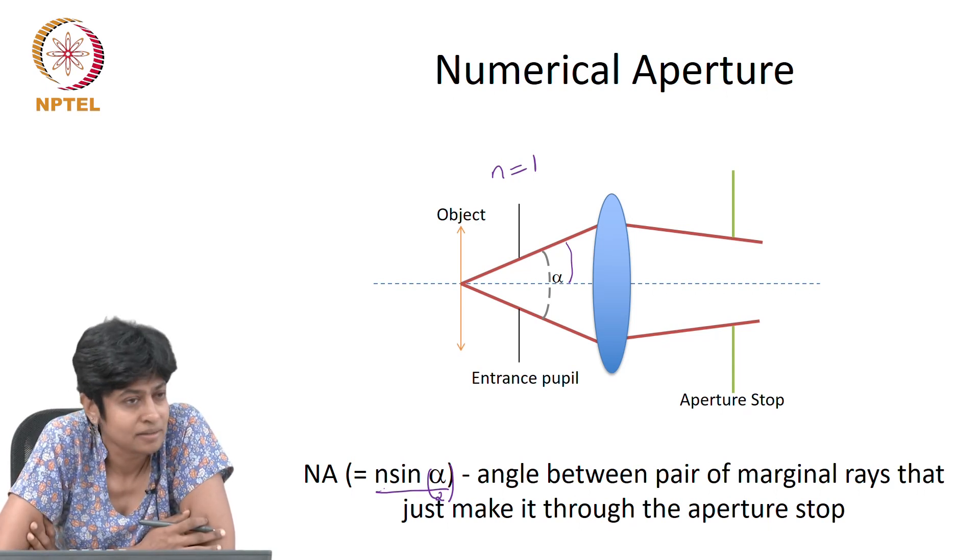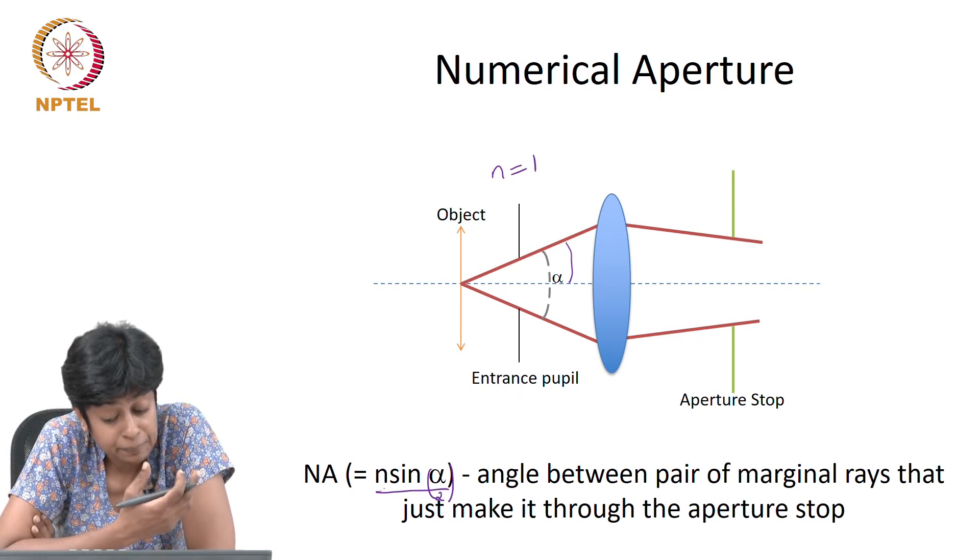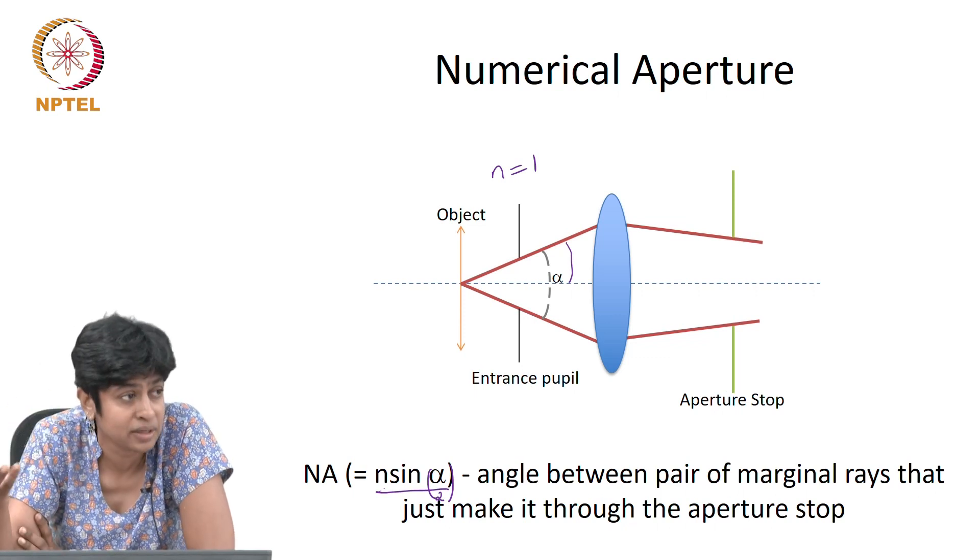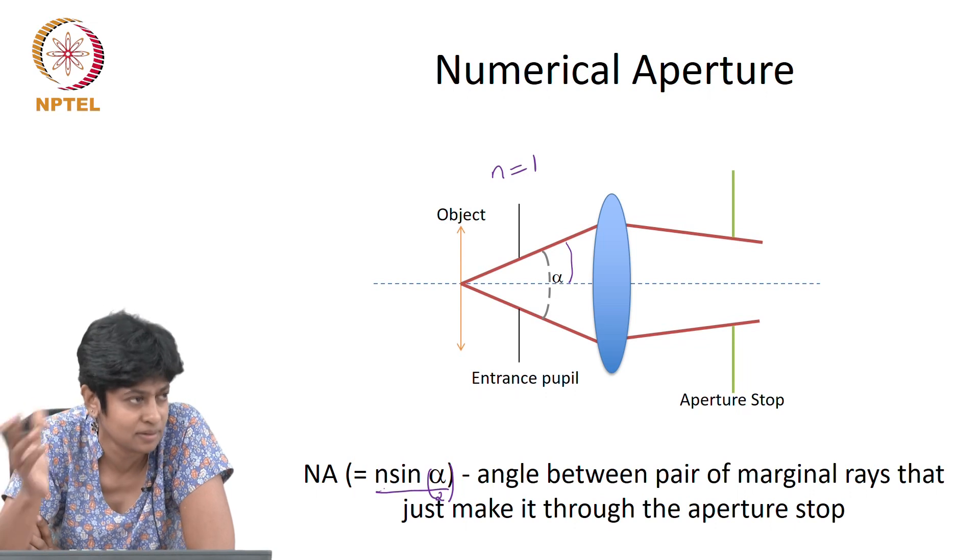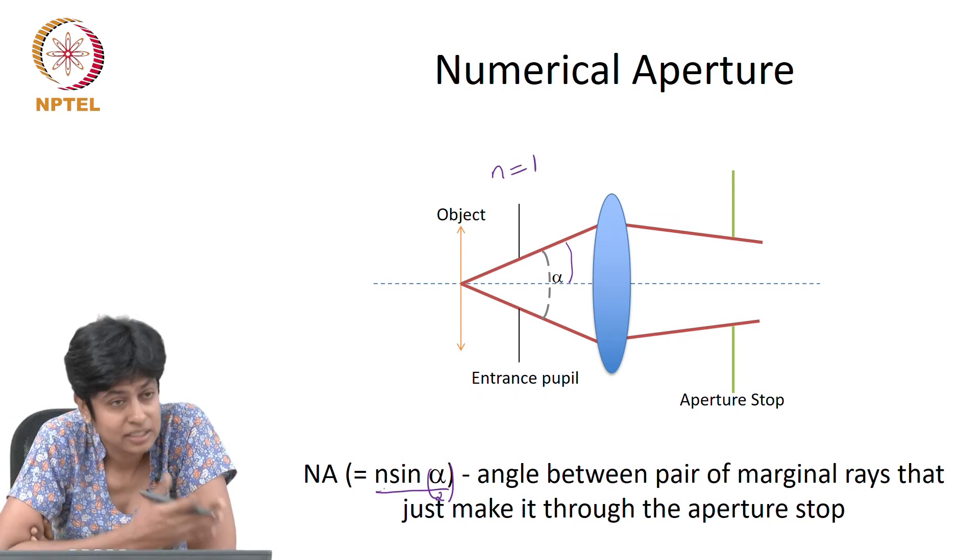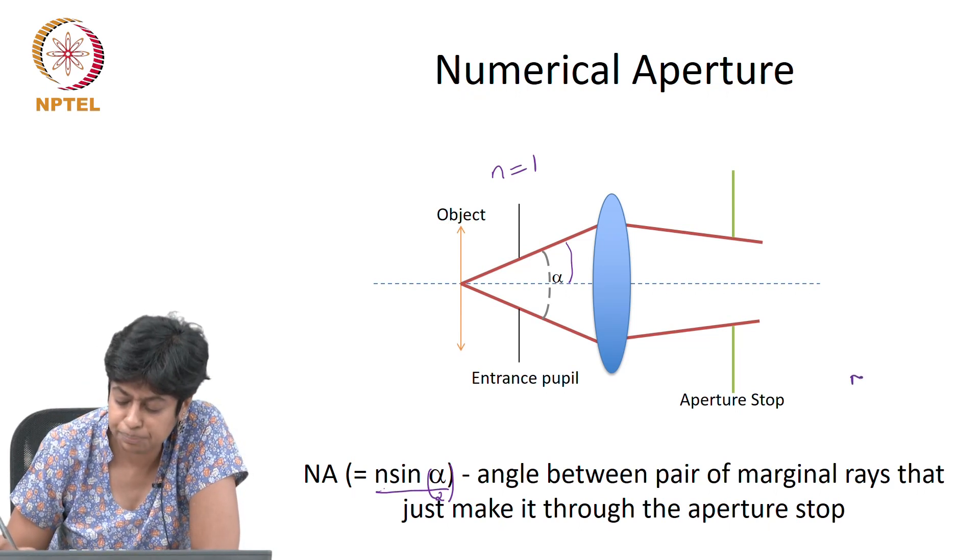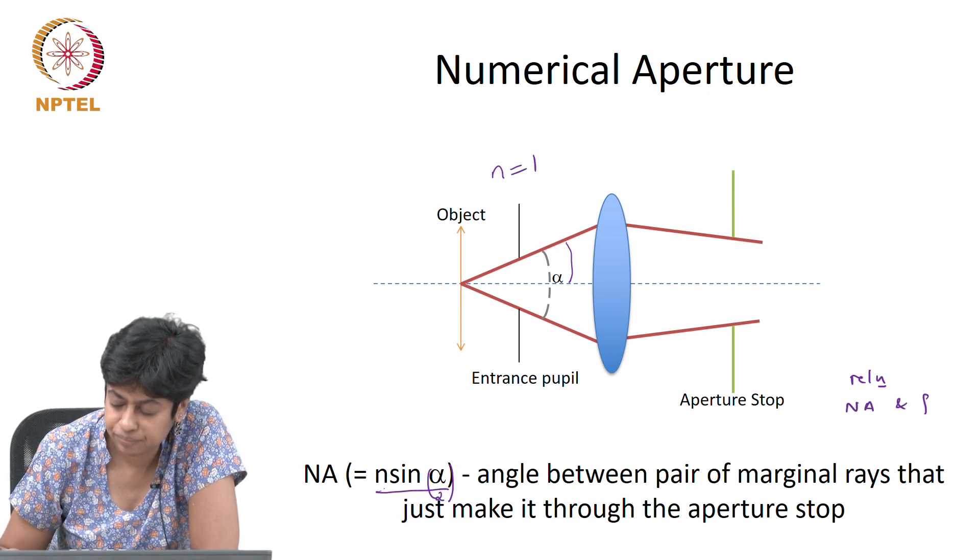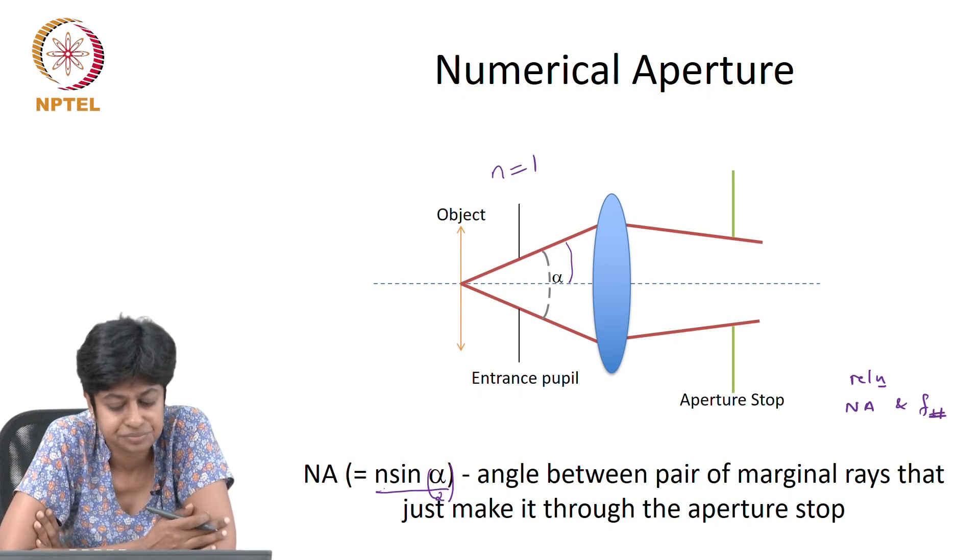And so people have defined or designed systems with as high a numerical aperture as possible in order to increase the amount of light that is collected. And as an exercise, I will ask you later to get the relationship between numerical aperture and f-number. Pretty simple.